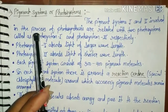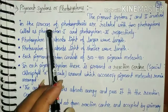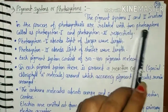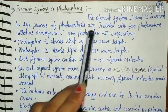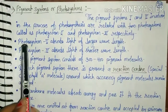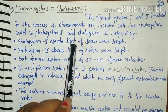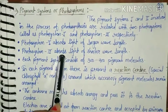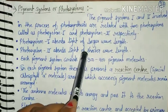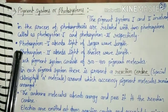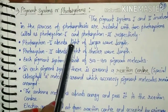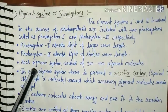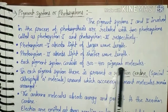These two pigment systems, first and second, are involved in the process of photosynthesis and are related with two photosystems, called photosystems. Photosystem first absorbs light of longer wavelength and photosystem second absorbs light of shorter wavelength. Each pigment system or photosystem consists of 300 to 400 pigment molecules.